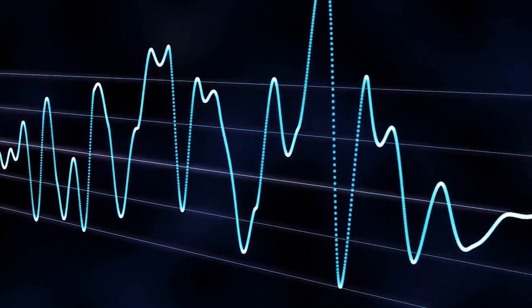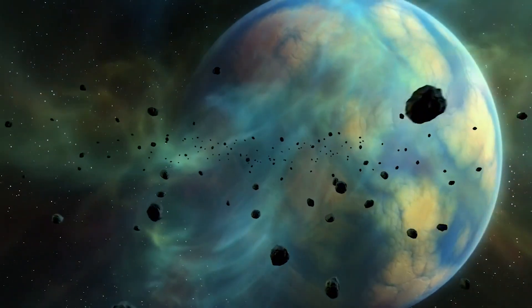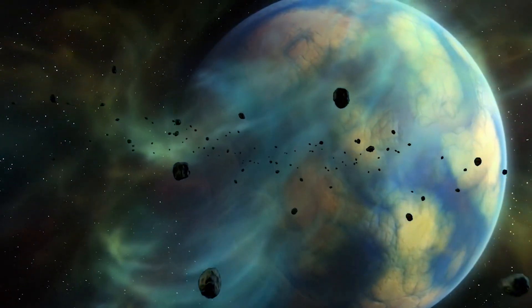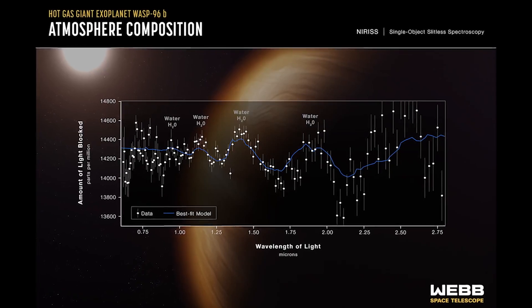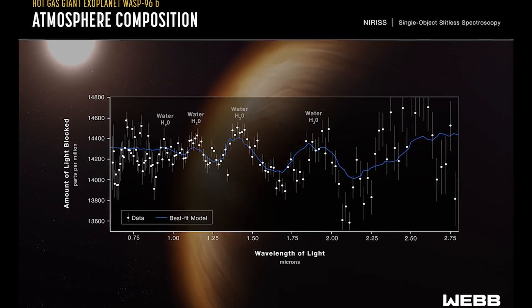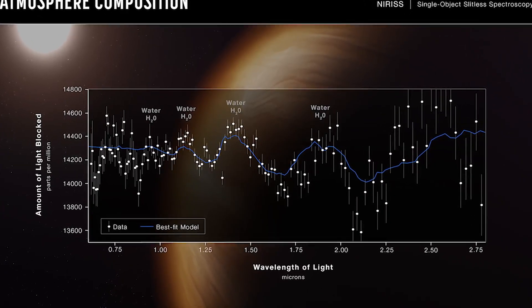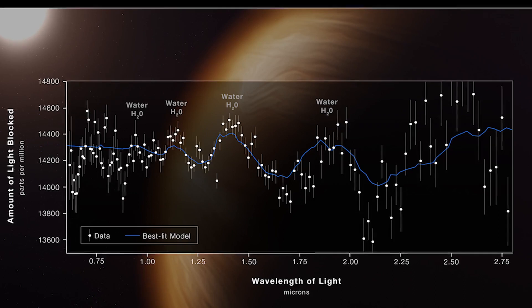A transmission spectrum captured by Webb's near-infrared imager and slitless spectrograph from a single observation reveals atmospheric properties of the hot gas giant exoplanet WASP-96b. A transmission spectrum is created by comparing starlight filtered through a planet's atmosphere as it passes across the star to unfiltered starlight observed while the planet is alongside the star. Each of the 141 data points on this graph shows the quantity of a specific wavelength of light that the planet blocks and absorbs. Based on the absorption pattern, the positions and heights of peaks, researchers may identify and analyze the number of essential gases in its atmosphere.